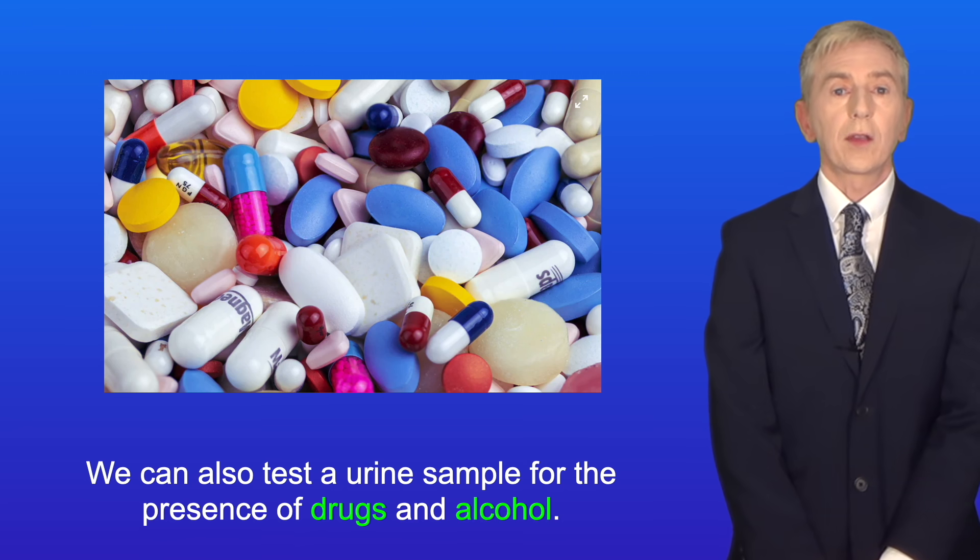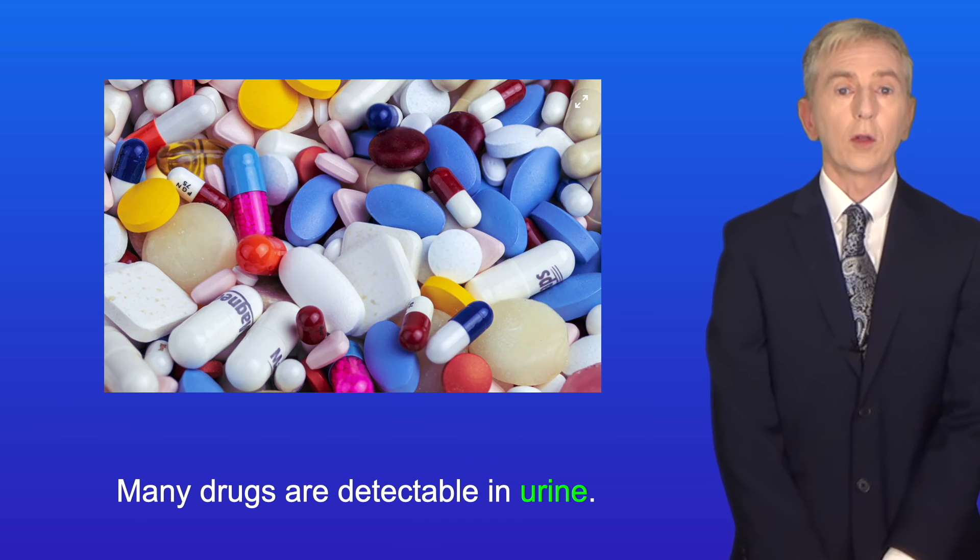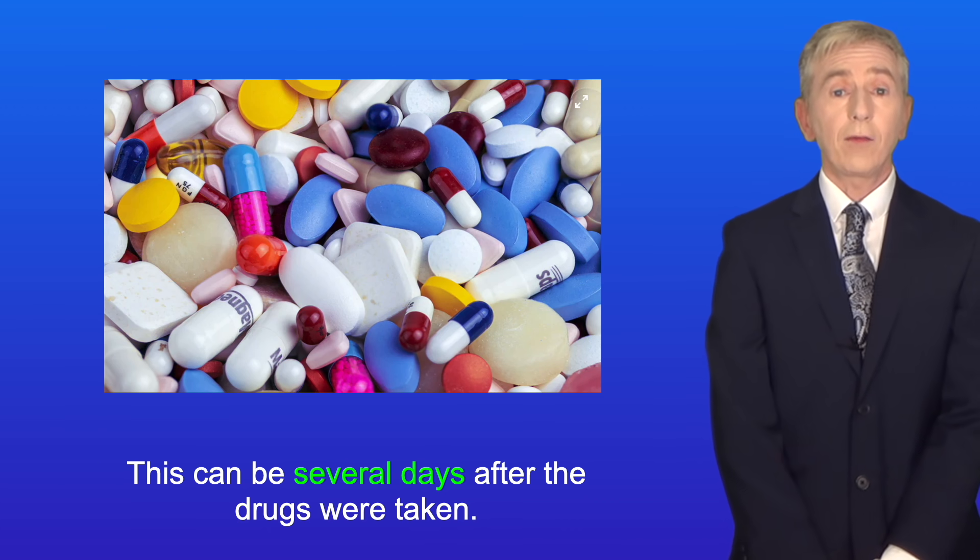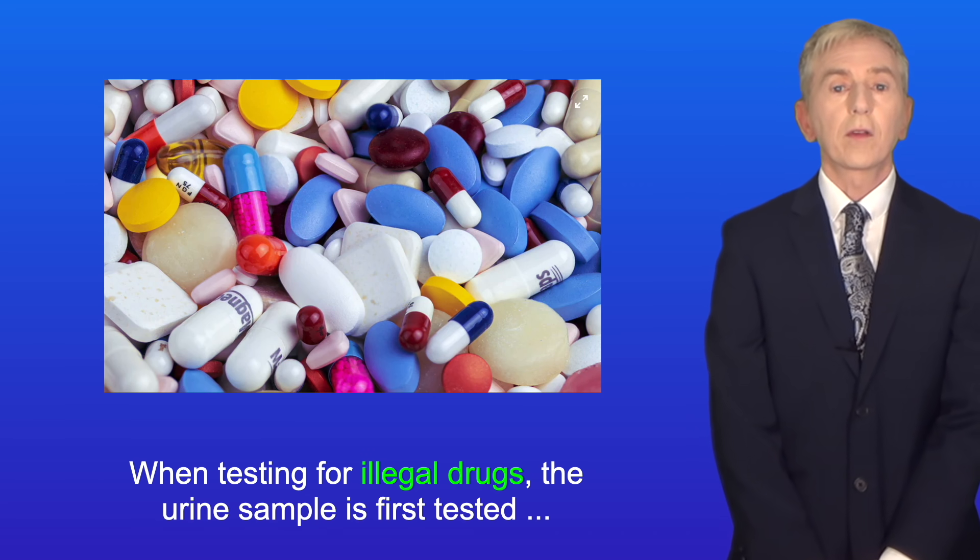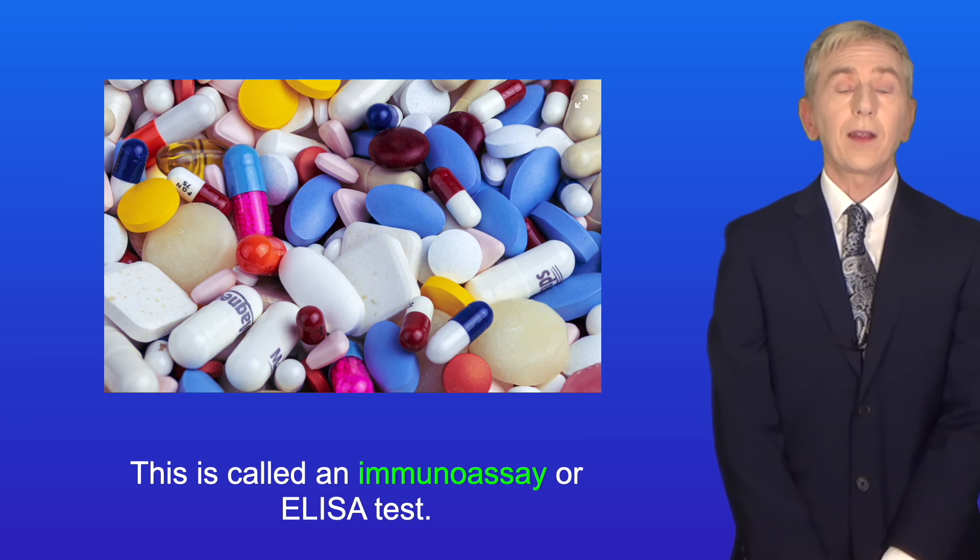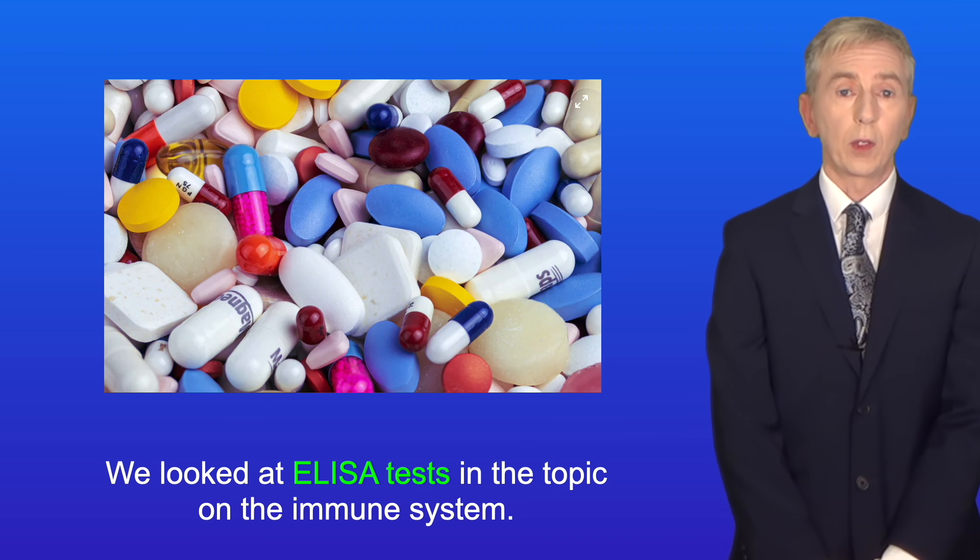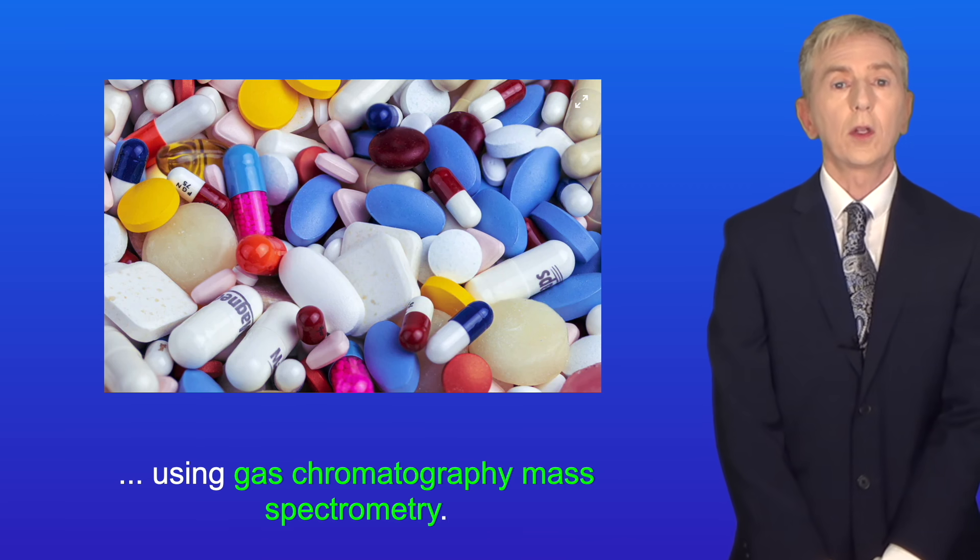We can also test a urine sample for the presence of drugs and alcohol. Many drugs are detectable in urine, and in some cases, the breakdown products of drugs are detectable, and this can be several days after the drugs were taken. When testing for illegal drugs, the urine sample is first tested using monoclonal antibodies. This is called an immunoassay or ELISA test, and we looked at ELISA tests in the topic on the immune system. If the ELISA test is positive, then the test is confirmed using gas chromatography mass spectrometry.